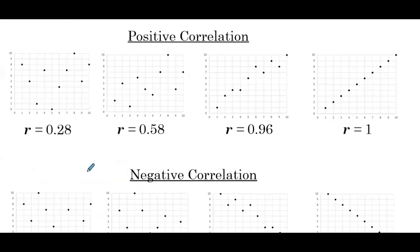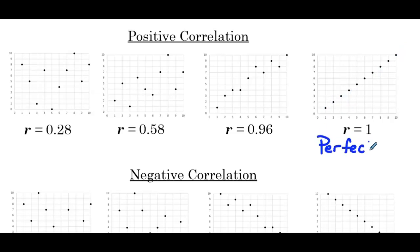We have four scatter plots that represent positive correlation. The correlation coefficient is a numeric value that gives us a number representing how strong or weak the linear relationship is between the data. Starting with the first scatter plot, the correlation coefficient is 1. If we were to draw the line of best fit, all the data points would fall on that line — we'll call this perfect positive correlation.